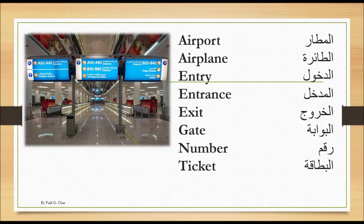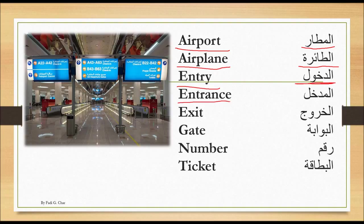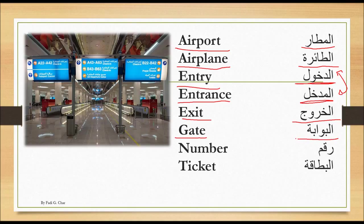Starting with al-matar itself — the airport is al-matar. Then we have airplane, which is al-ta'ira. Then we have entry, which is al-dukhol. We have entrance, which is al-madkhal. Make sure we're saying two different words here: entry is al-dukhol and entrance is al-madkhal. The exit is al-khuruj, and gate is al-bawwaba.